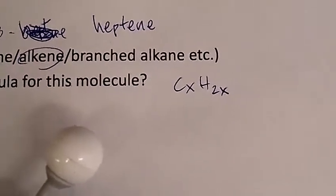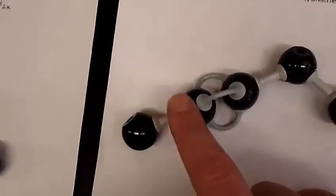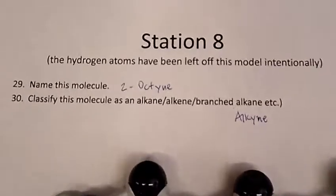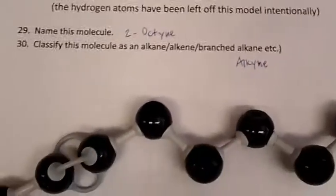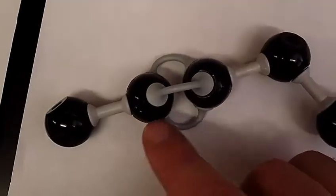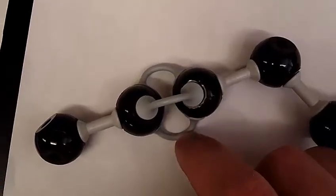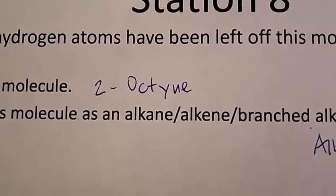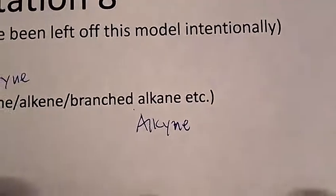Station eight — I have a chain of eight carbons here and I've left the hydrogens off intentionally. This is 2-octyne. The reason it's an oct is because there's a chain of eight. The YNE ending indicates a triple bond. I've noticed some of you are misspelling octyne — it doesn't end in INE, it ends in YNE. This is of course an alkyne, so the classification of molecule it belongs to is an alkyne.